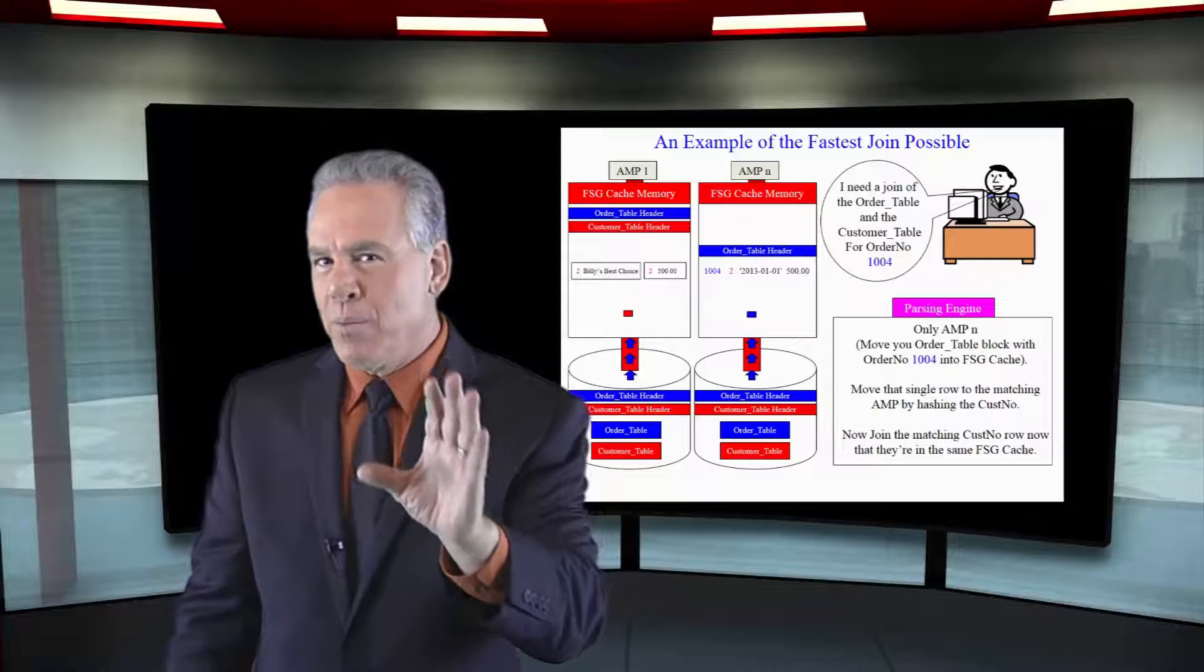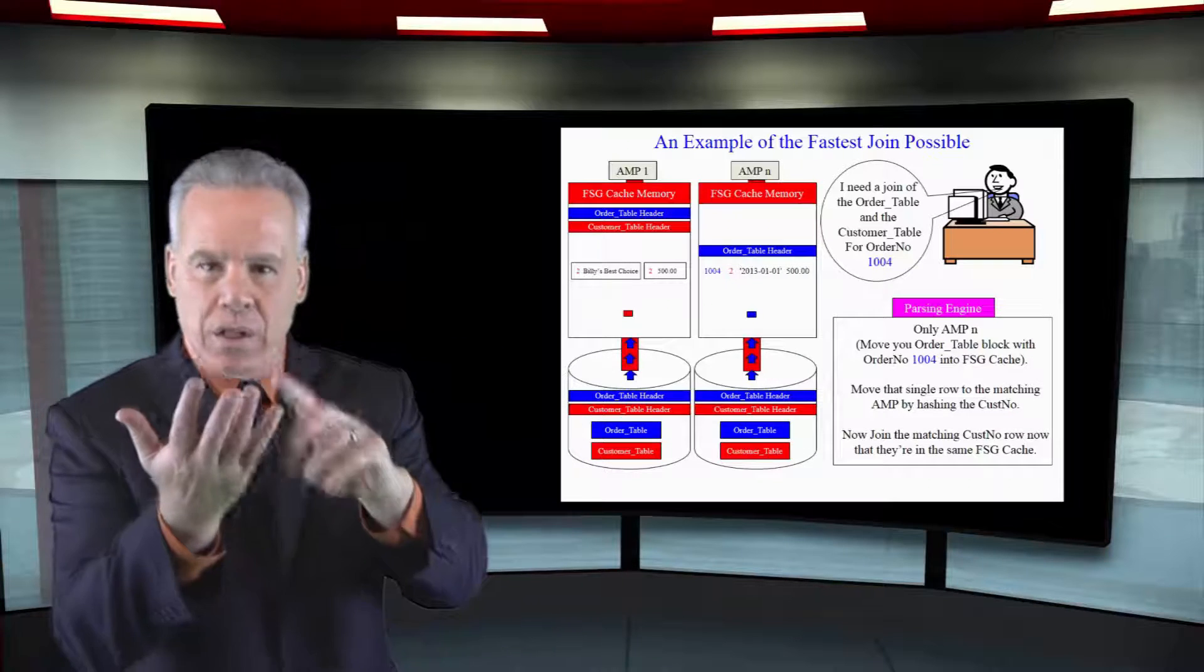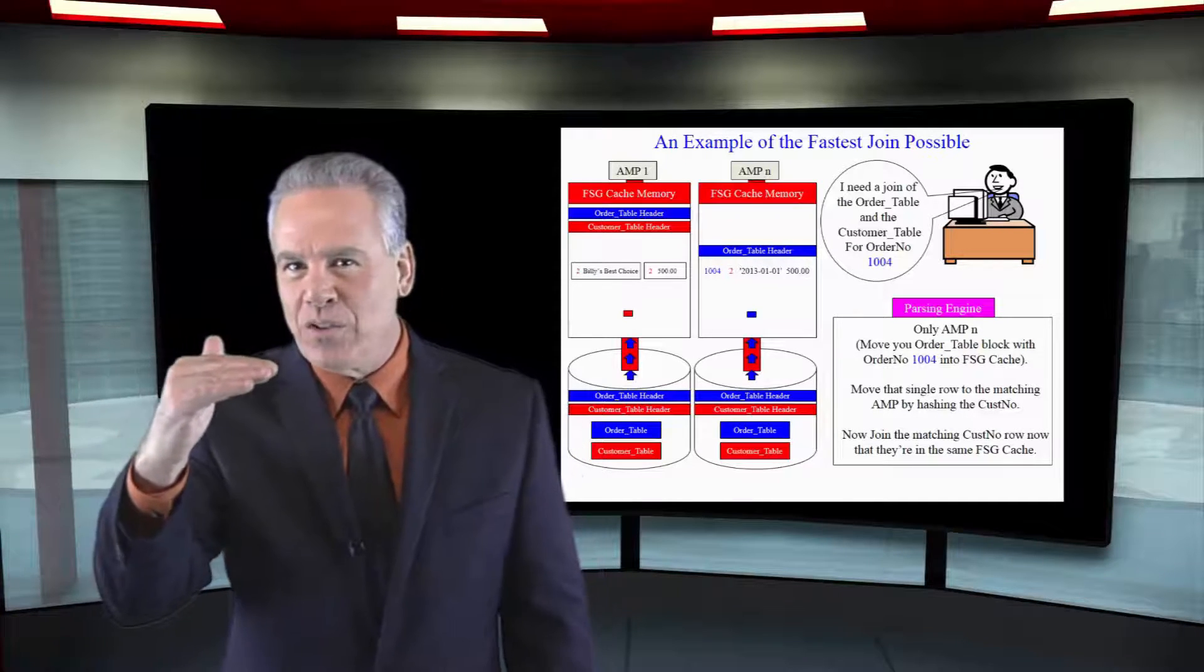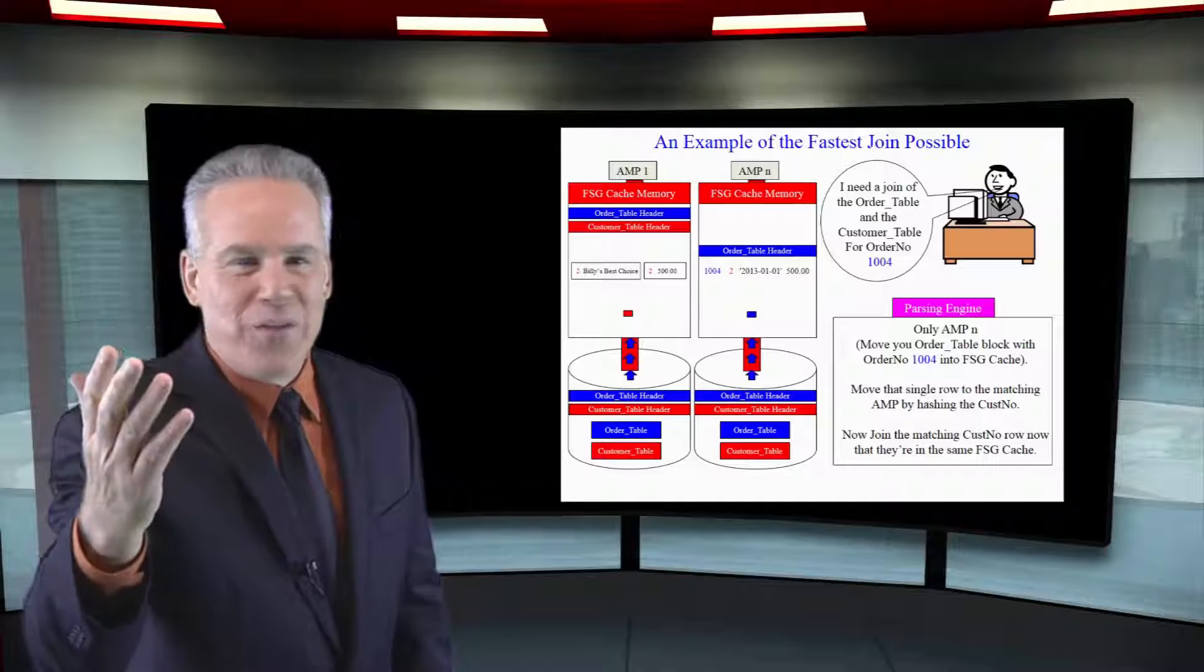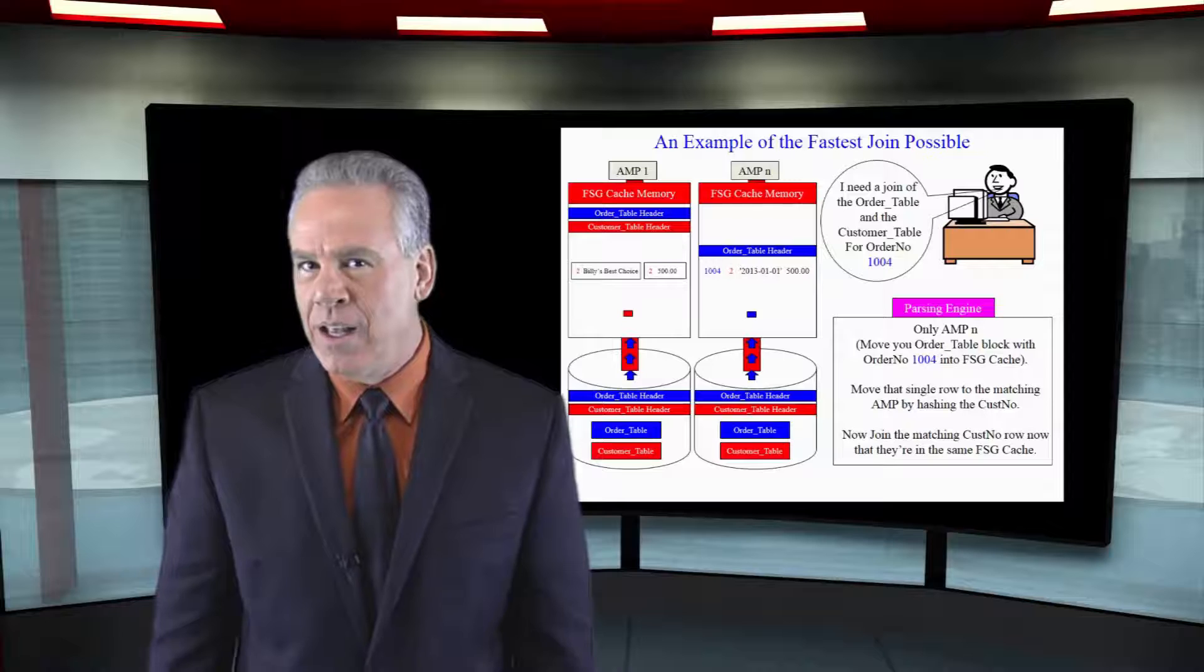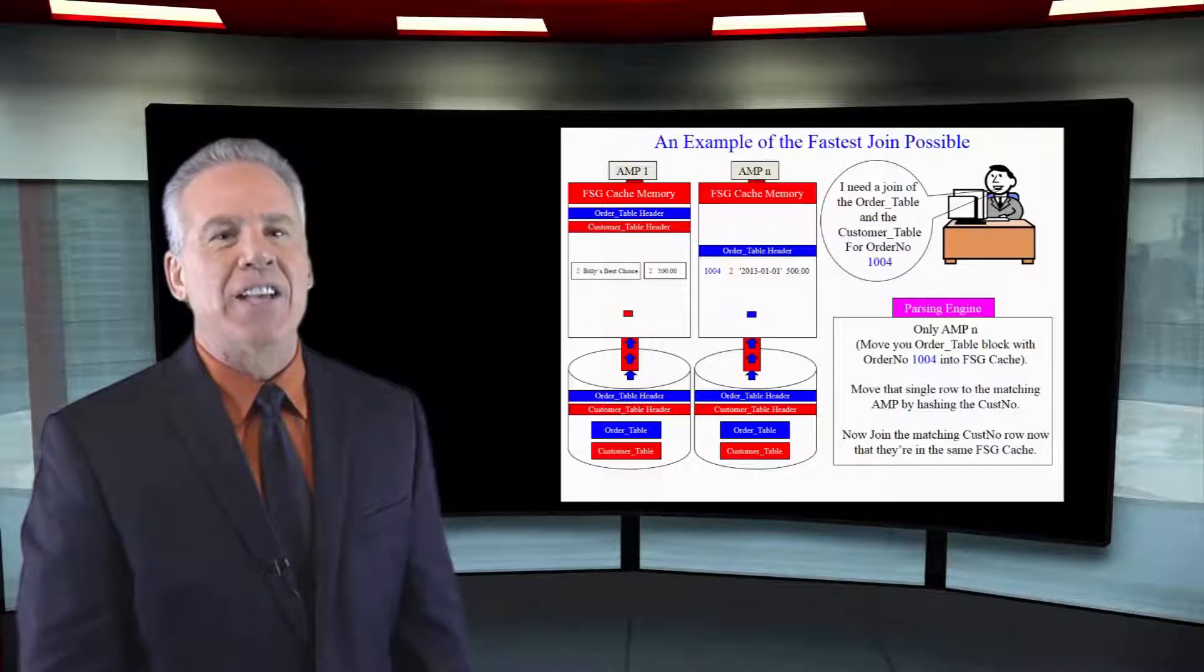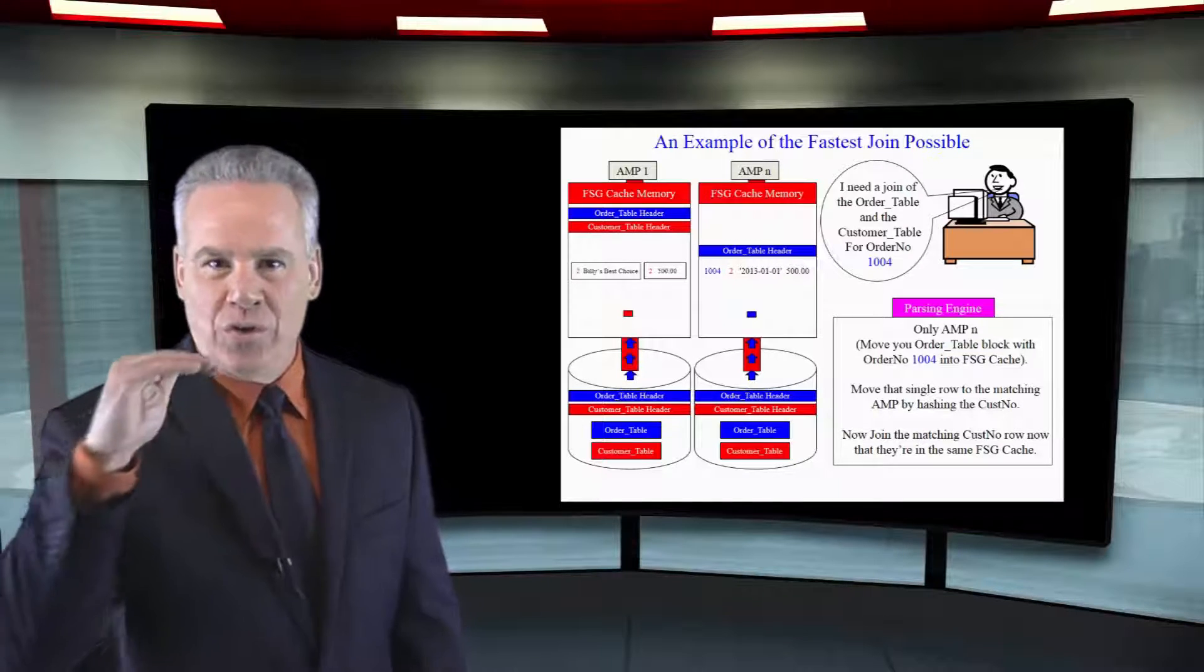Which brings me to a very important point. In the actual query we said we would like to know the customer number, the customer name, and just the order total. When Teradata redistributes things in memory across the Bynet, it doesn't bring the whole row if you didn't ask for all the information. The parsing engine will only bring and redistribute the information it needs to satisfy the query, cutting down on as much space as possible. Why drive a truck when you can drive a motorcycle?